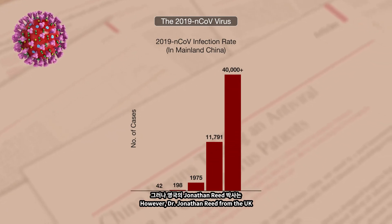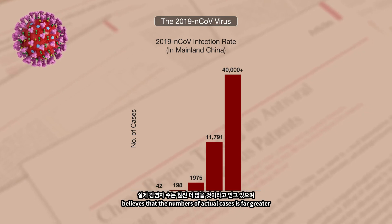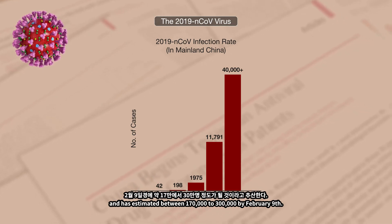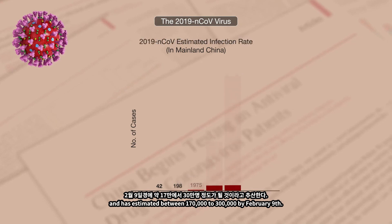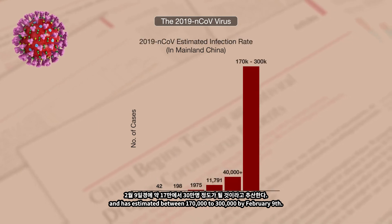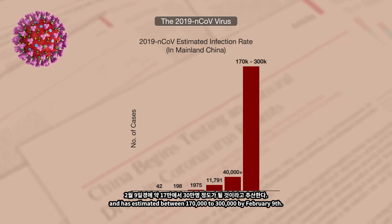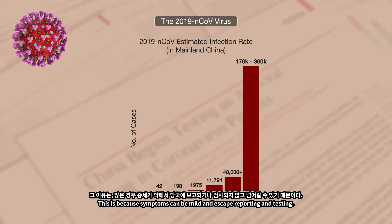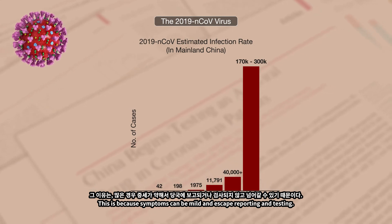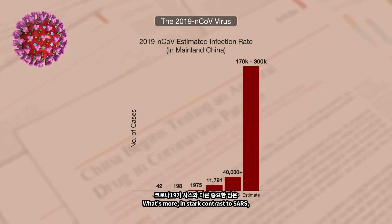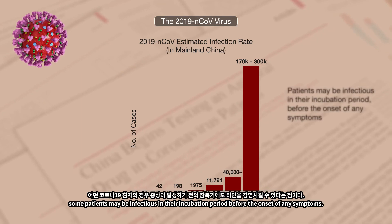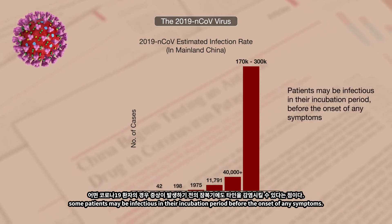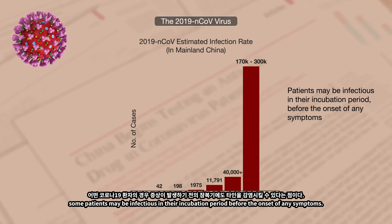However, Dr. Jonathan Reed from the UK believes that the numbers of actual cases is far greater and has estimated between 170,000 to 300,000 by February 9th. This is because symptoms can be mild and reporting and testing are limited. What's more, in stark contrast to SARS, some patients may be infectious in their incubation period before the onset of any symptoms.